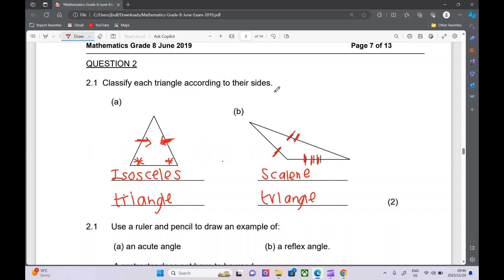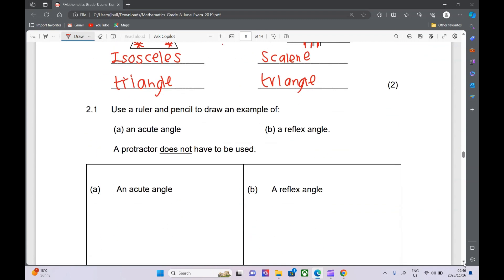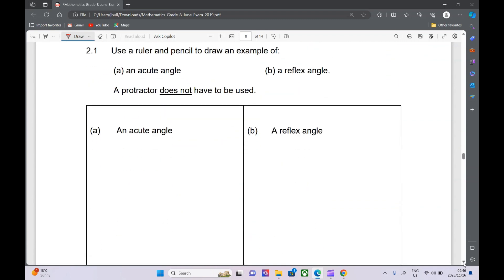Then 2.1 use a ruler and a pencil to draw an example of an acute angle. We don't have to use a protractor and then a reflex angle. You're going to have to excuse me. I don't have a ruler on the computer that I can use. But if we want an acute angle, acute means it's cute, it's really small. So any sort of angle like this. Any small angle, it can be slightly bigger. That would be an acute angle.